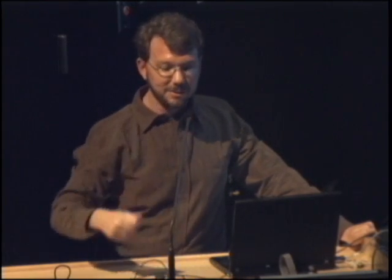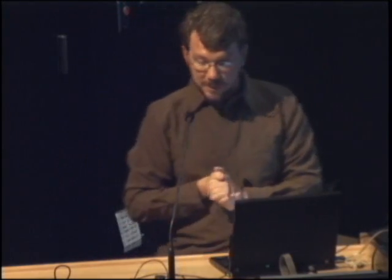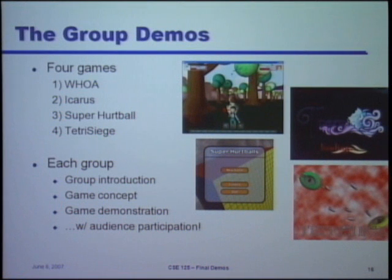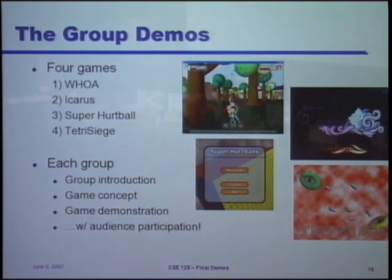Okay, I want you guys to get started. I'm going to stop talking and we're going to move on to the games. We have four groups and we're going to demo four different games: Woe, Icarus, Super Hurt Ball, and Tetris Each. Each group is going to give an introduction to the members of the group, talk about the concept of the game, and then do a demo. The demos will have audience participation — each group is going to ask some of you in the audience to come up and be guinea pigs to play the game. All right, let's get started with group one.